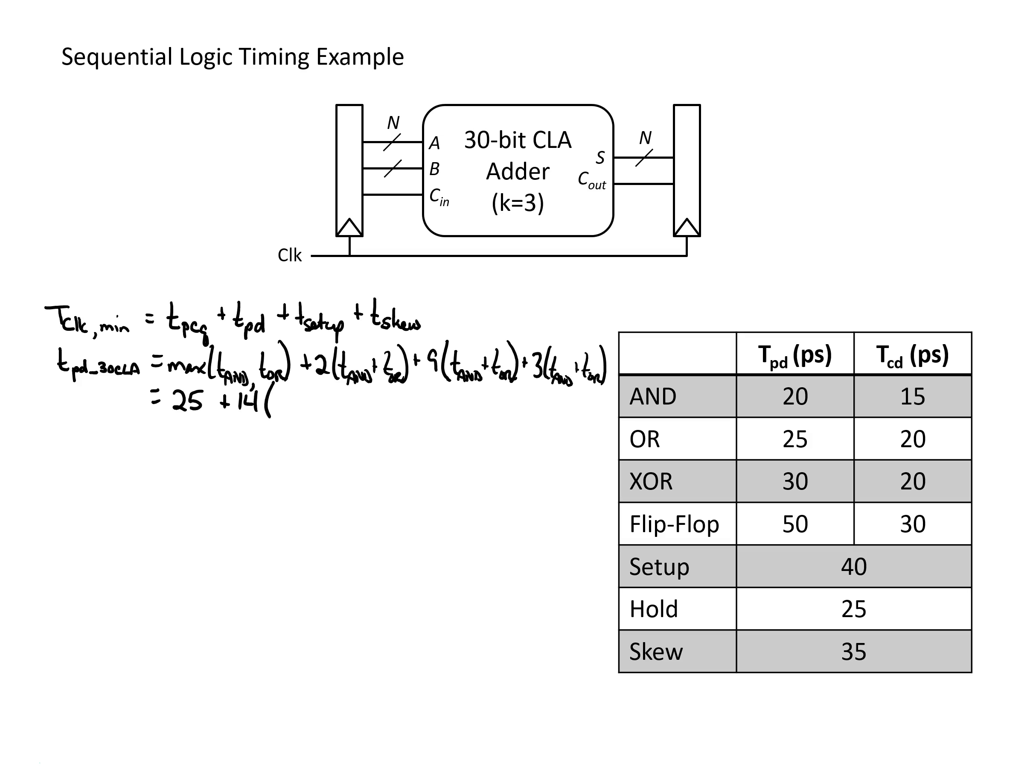So we have 14 times the AND plus the OR gate, and that gives us a total delay of 655 picoseconds for just the combinational logic.